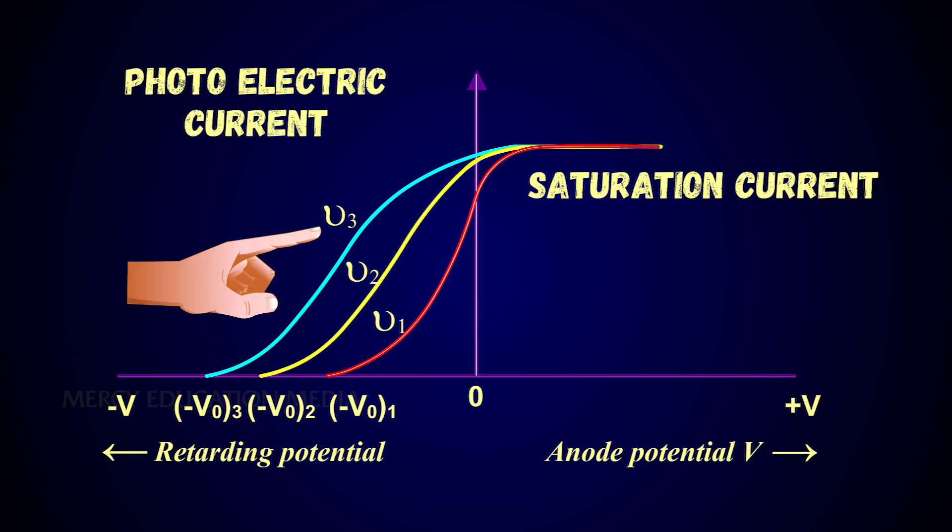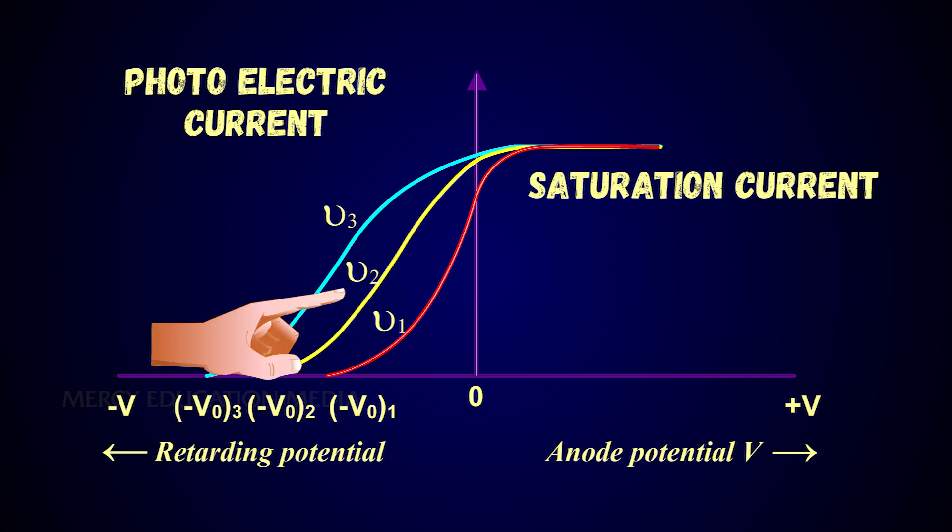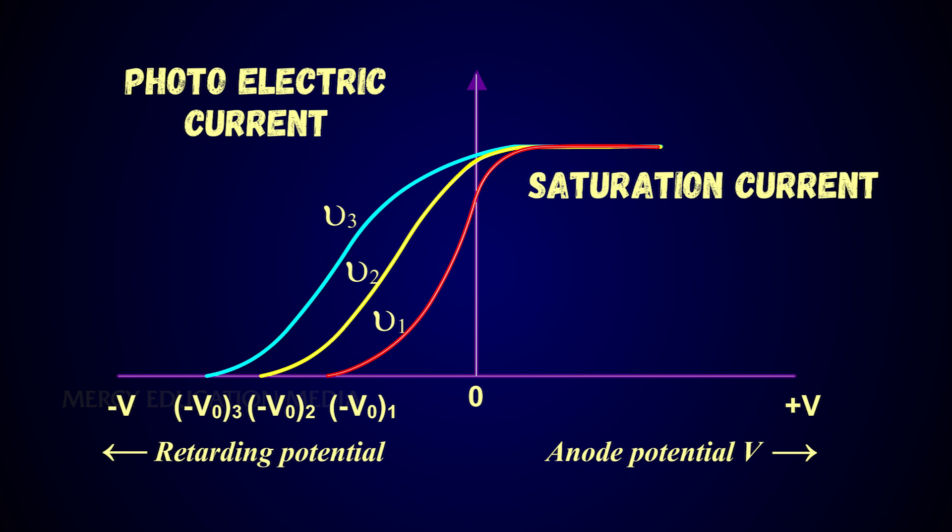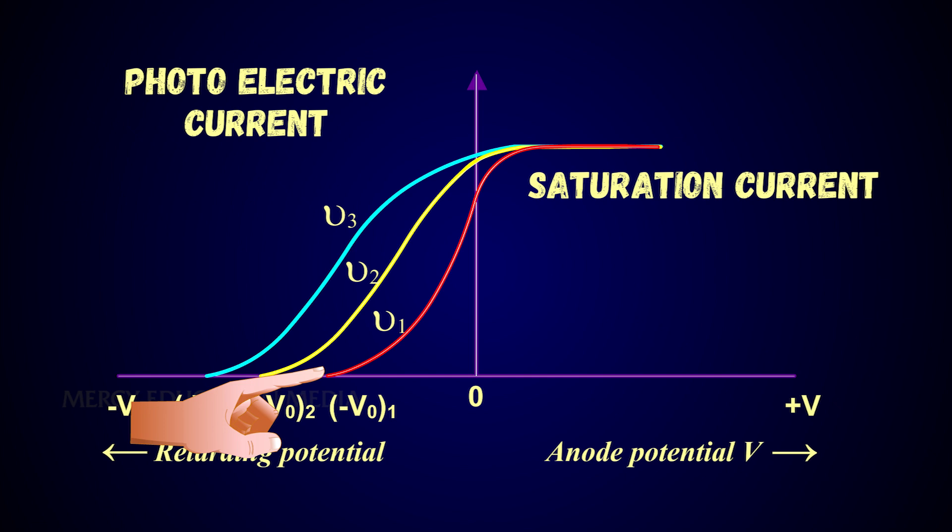For frequencies nu3 greater than nu2 greater than nu1, the corresponding stopping potentials are in the same order: V0.3 greater than V0.2 greater than V0.1.